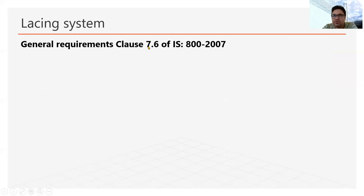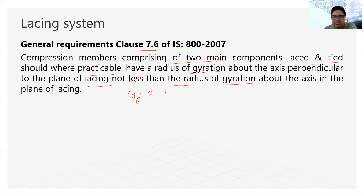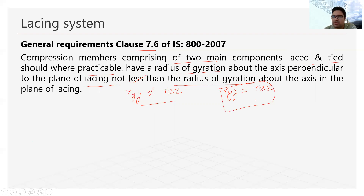There are some requirements for the lacing system as per clause 7.6. The first requirement is that compression members comprising two main components, laced and tied, should where practicable have a radius of gyration about the axis perpendicular to the plane of lacing. Simply stated: r_yy should not be less than r_zz. This means both r_yy and r_zz should be close — ideally equal — for the built-up column.